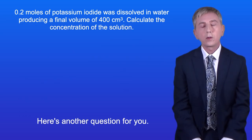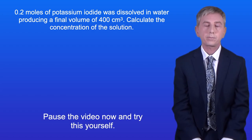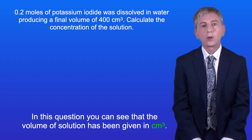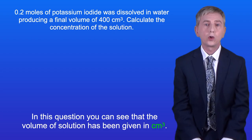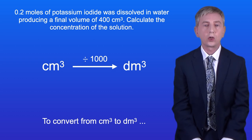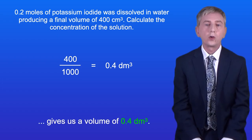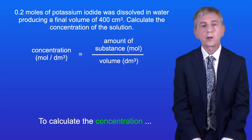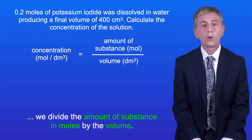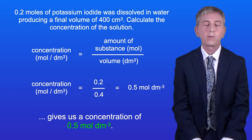Here's another question for you. 0.2 moles of potassium iodide was dissolved in water, producing a final volume of 400 centimetres cubed. Calculate the concentration of the solution. In this question, the volume has been given in centimetres cubed, so we first need to convert this to decimetres cubed by dividing by 1000. Dividing 400 by 1000 gives us a volume of 0.4 dm³. Dividing 0.2 by 0.4 gives us a concentration of 0.5 moles per decimetre cubed.